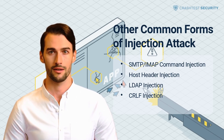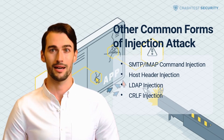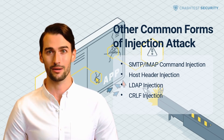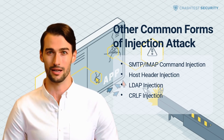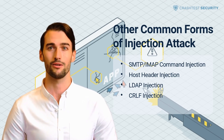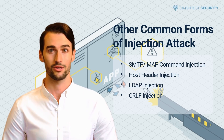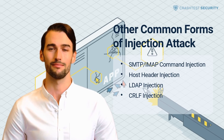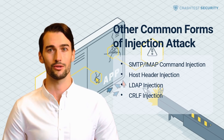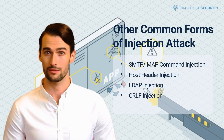Carriage return and line feed, or CRLF, are elements used in HTTP headers to terminate a line. They are also used to split text streams, such as HTTP headers, into separate parts. A CRLF injection occurs when an attacker manages to introduce a CRLF sequence into an application, typically by introducing it into an HTTP header — a technique called HTTP response splitting.